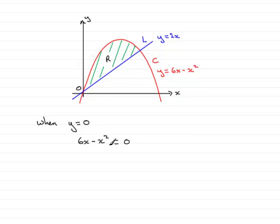So we have a quadratic equation here. We need to factorize this, so pull out a common factor x and then you have 6 minus x equals 0.